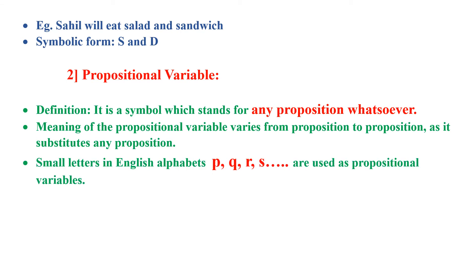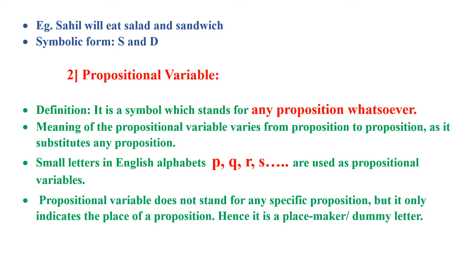And small letters in English alphabets, that is small p, q, r, s are used as propositional variables. Propositional variables do not stand for any specific proposition but it only indicates the place. So, they are called placemakers or dummy letters.